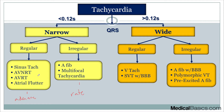Being able to tell the difference between AVNRT and AVRT and all of these different waveforms is helpful, but at least if you cannot do that, you have a treatment to think of if somebody were to ask you. For wide complex tachycardia, it's more complicated — we start thinking about antiarrhythmics and there's a variety we can use. Wide complex tachycardia is when we start thinking about antiarrhythmics and bringing in cardiology for consultation much sooner. Narrow complex tachycardia, we think about adenosine and rate control.